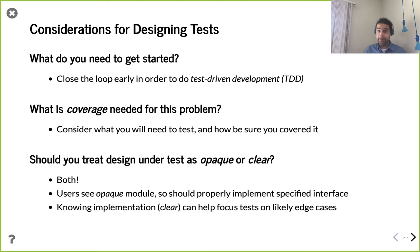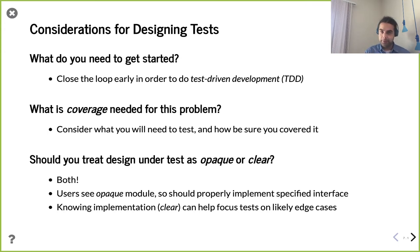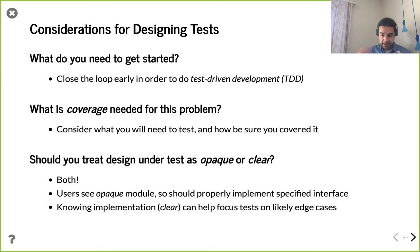When thinking about making these tests, ask yourself: what sort of coverage do you need? How do I know this is right? Think about where things can go wrong. Some input combinations don't make sense — those aren't things to be concerned about. Also consider whether you should treat the design as opaque or clear. Historically people used the terms 'black box' or 'white box' — in this course we use the more modern terminology of opaque and clear. The answer is: use both.